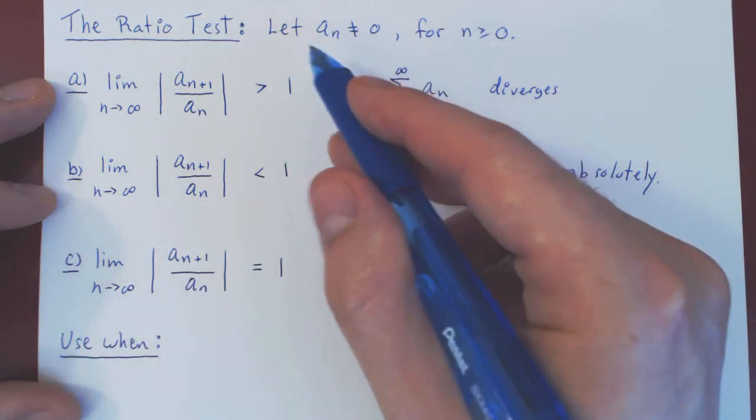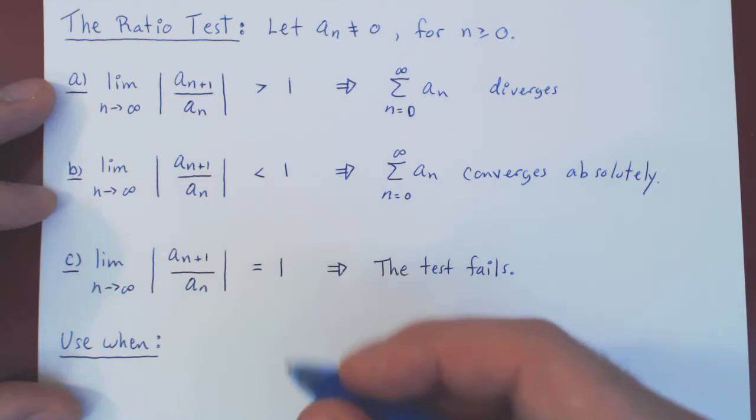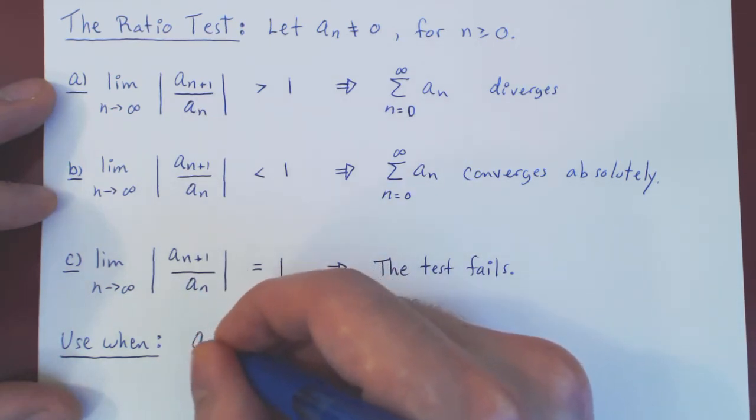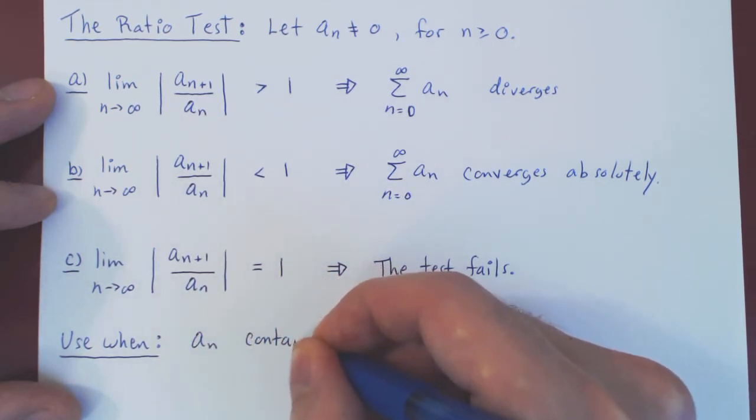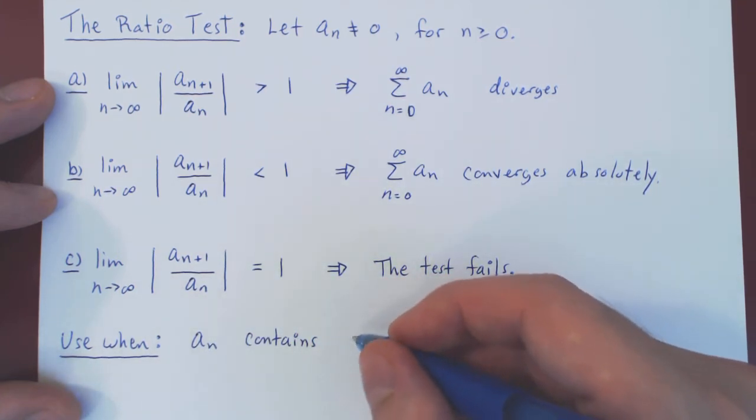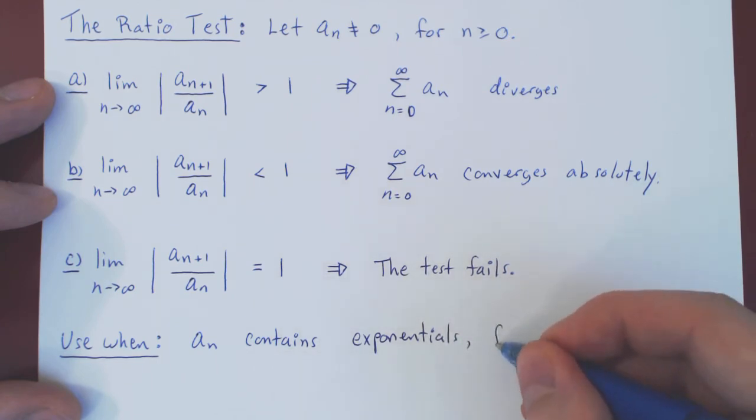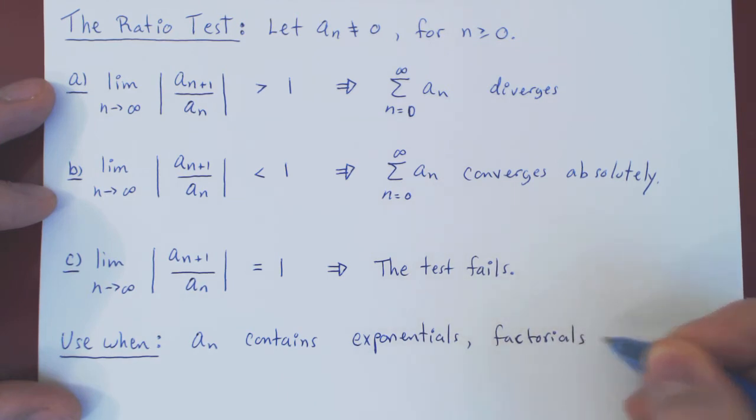So if you see an an with any such function, a good bet is to use the ratio test. Use when an contains—so parts of an contain—exponentials, factorials, and/or n to the n.